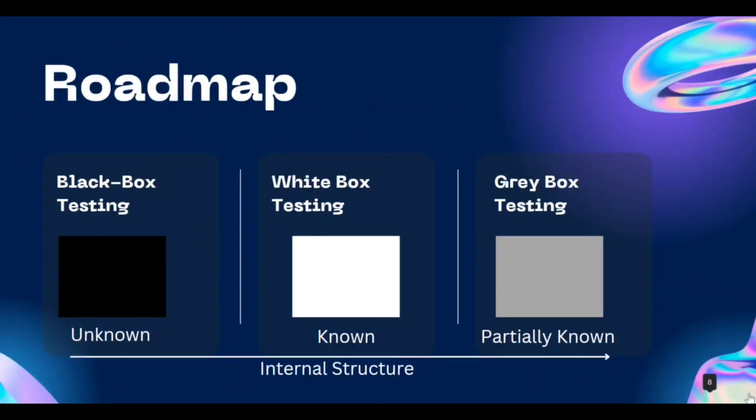Here is the roadmap of this session. Firstly we are going to talk about black box testing, secondly we will look at white box testing, and finally we will touch on grey box testing. For black box the keyword is 'unknown', for white box the keyword is 'known', and for grey box testing the keyword is 'partially known'.